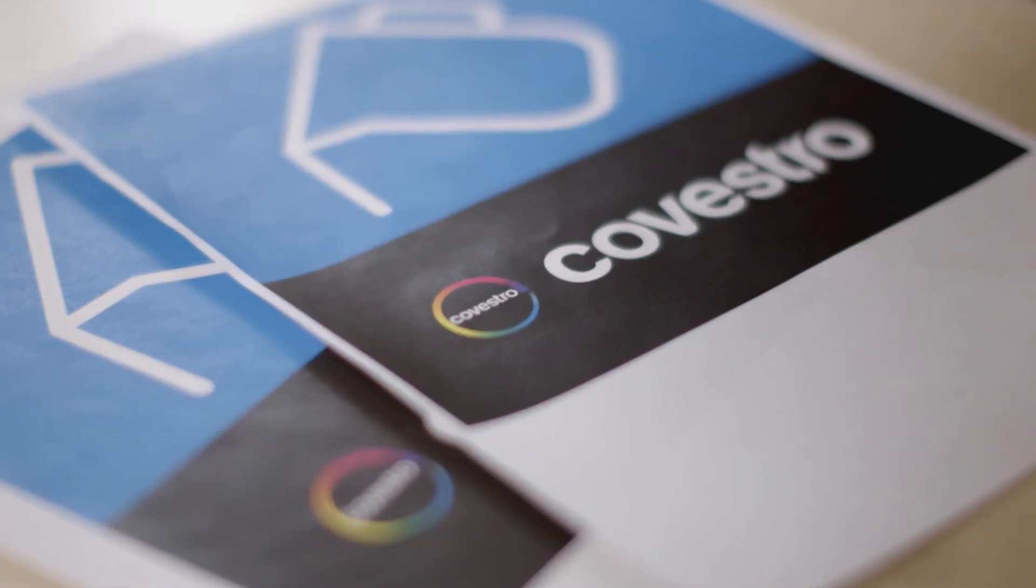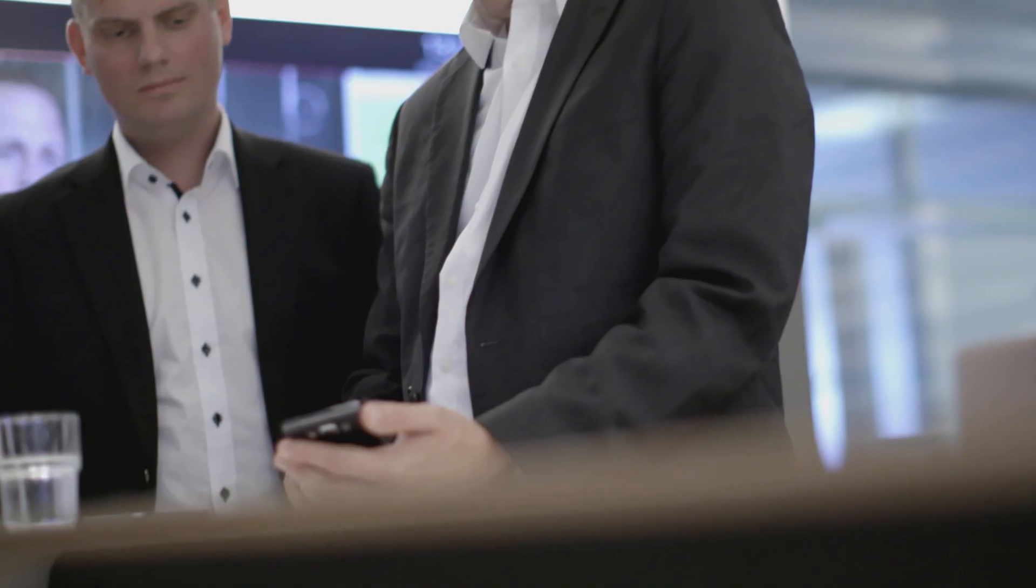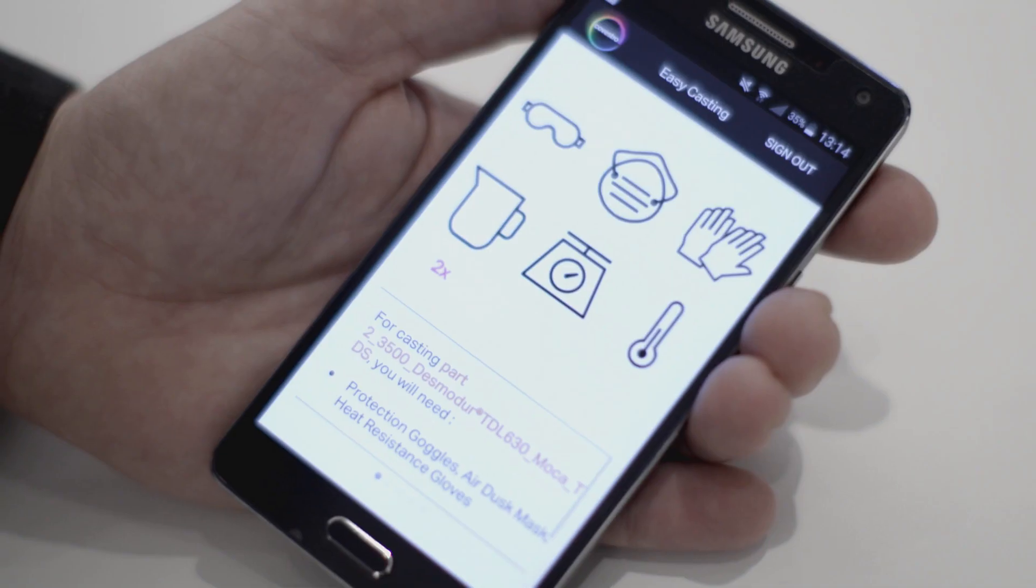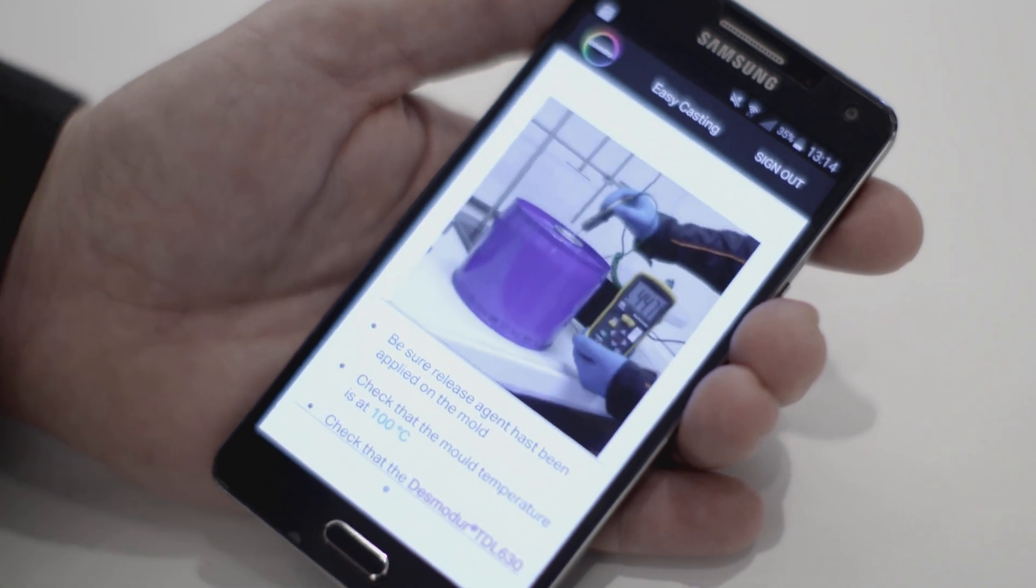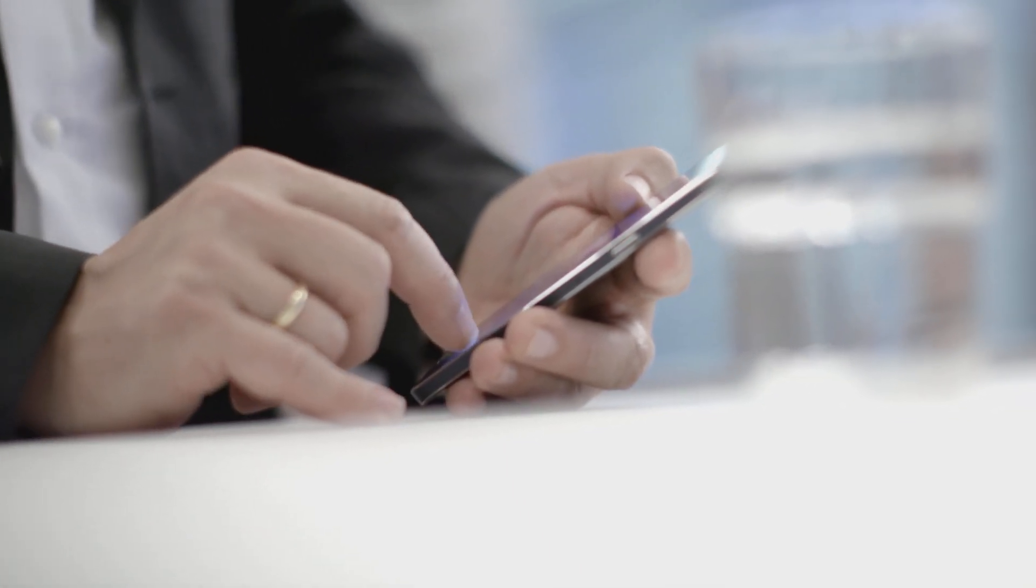We developed the Covestro EasyCasting app as a part of our digital customer journey program. The operator simply uses a smartphone or mobile device, enters the relevant data and then receives detailed instructions including timer signals and the Covestro EasyCasting app for hand casting.